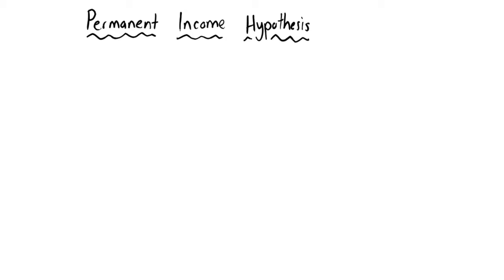In this video we're going to be looking at the Permanent Income Hypothesis. This was developed by Friedman, another Nobel Prize winner. This is another model where we're looking at intertemporal choice, and more specifically, similarly to the Life Cycle Hypothesis we looked at in the previous video, we're looking at consumption choices over someone's lifetime — and in this case we can almost interpret it beyond someone's lifetime. In the Permanent Income Hypothesis we are making an assumption about utility where we suppose that individuals have altruism towards their children and children beyond that.